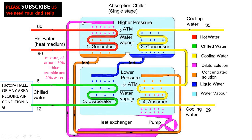First of all, there are two compartments. The first is called the higher-pressure compartment and the second is the lower-pressure compartment. The pressure in the higher-pressure compartment is about one-tenth of atmospheric pressure, and the lower compartment is even lower — approximately one-hundredth of atmospheric pressure.